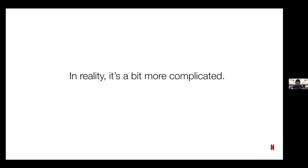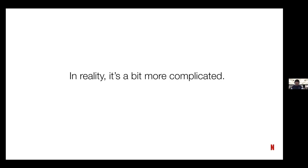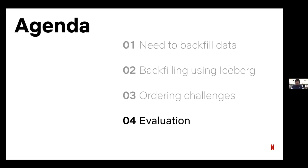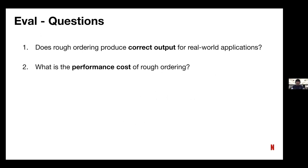In reality it's not this simple, because some applications have really short misalignment thresholds — as short as 15 minutes — based on the assumptions they've made in the business logic about event ordering. Also, it's not static windows but moving windows, which introduces certain challenges. So far, we've seen why we need to backfill data, how we can backfill using Iceberg, and the ordering challenges the Iceberg source poses. Now let's look at some numbers from production deployment. The two questions we wanted to answer were: does rough ordering actually produce the correct output for real-world applications, since the application doesn't know it's reading from Iceberg and doesn't know the source doesn't provide the same guarantees as Kafka? And what is the performance cost of rough ordering?